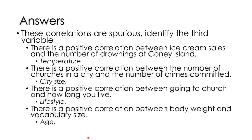There's a positive correlation between the number of churches in a city and the number of crimes committed — that's easy, it's city size. There's no relationship between the number of churches and the number of crimes; it's spurious. The third variable is the size of the city: the bigger the city, the more churches; the bigger the city, the more crimes. As for the correlation between going to church and how long you live — that's also a spurious correlation. People who have a certain personality type that makes them watch their health and be careful about dangerous things are more likely to go to church, and they're also more likely to do things that guarantee them a long life.